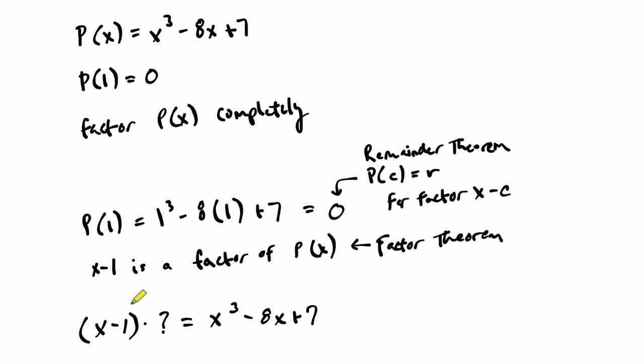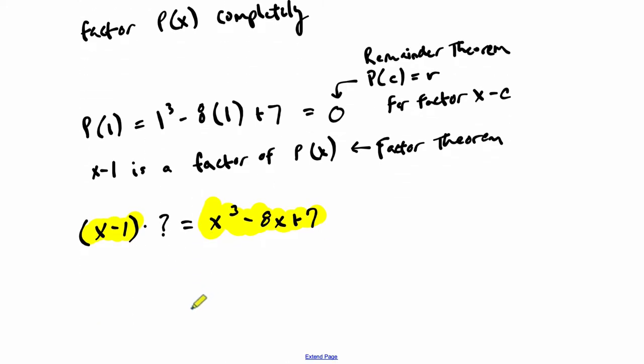And now, this is where polynomial division comes into play. Because we could say, if this is true, X minus 1 times something is the polynomial, then if this polynomial is divided by this factor, we should get the missing factor. And this is the polynomial long division. It's already coming into use and we haven't gotten to rational functions yet. Wow.